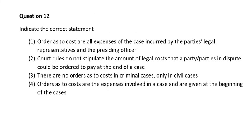Question twelve. Indicate the correct statement. Number one, orders as to cost are all expenses of the case being kept by the parties' legal representatives and the presiding officer; number two, court rules do not stipulate the amount of legal costs that a party or parties in dispute could be ordered to pay at the end of a case; number three, there are no orders as to cost in criminal cases only in civil cases; number four, orders as to cost are the expenses involved in a case and are given at the beginning of the case. The correct answer is number two: court rules do not stipulate the amount of legal costs that a party or parties in dispute could be ordered to pay at the end of a case.